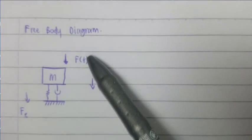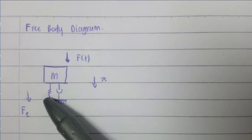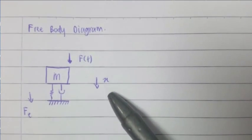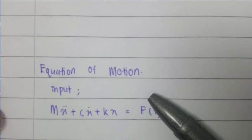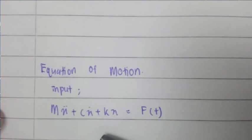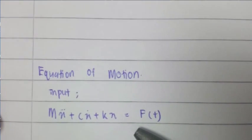This is the free body diagram of the road breaker. This is the input force F(t), this is the output force Fe. This is the whole mass, the damper, the spring, and the movement of the road breaker which is into the ground. The equation of motion for the input is: Mx double dot plus Cx dot plus Kx equals F(t).